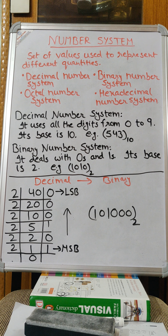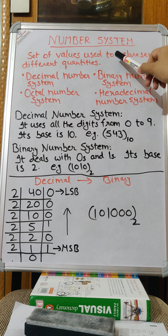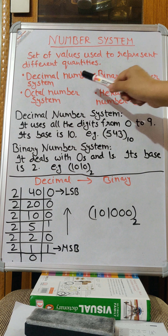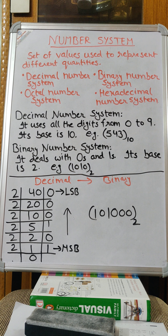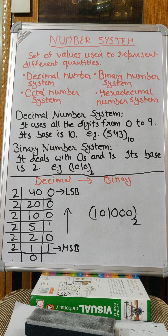What is number system? Number system is a set of values used to represent different quantities. For example, decimal number system is one kind of number system. In our day-to-day activities we use the decimal number system, and it consists of 10 digits, that is 0 to 9. We use it normally — like 10 bananas, 50 apples, 20 pencils. All these are decimal number system.